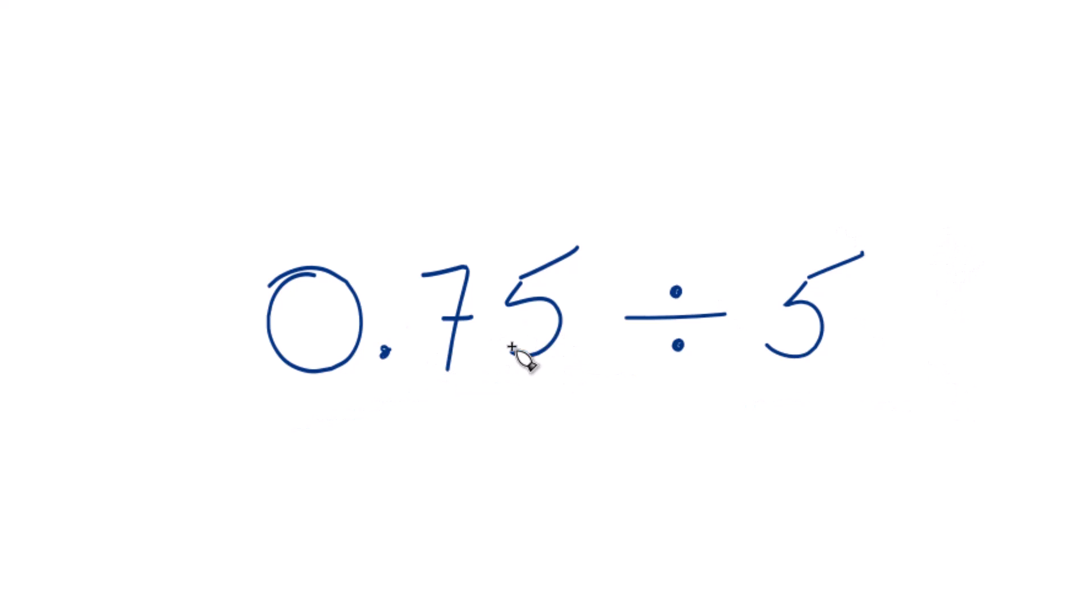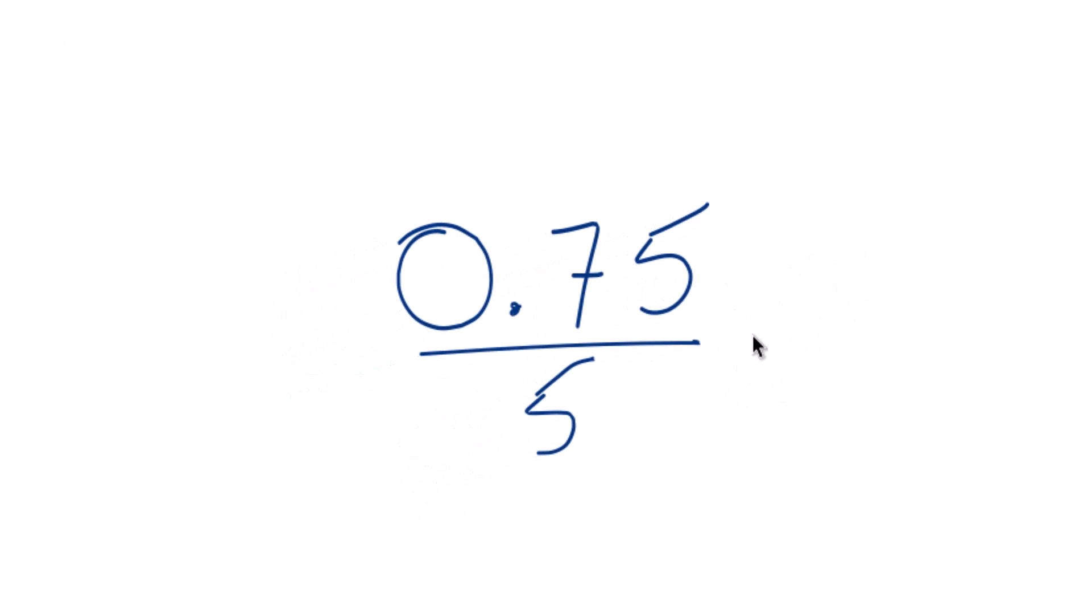So really, 0.75 divided by 5, we could think of it like this. That's another way to think of it. But really what we want to do is we want to divide 5 into 0.75, like this. So we'll do long division here.